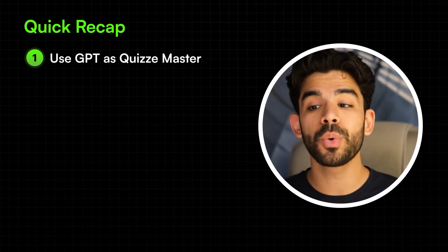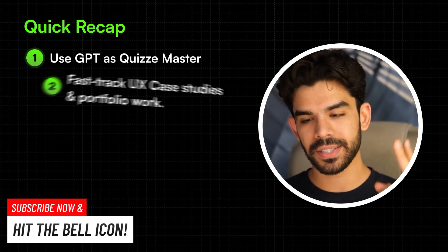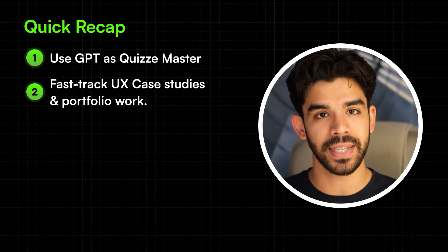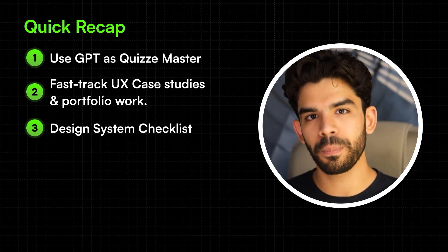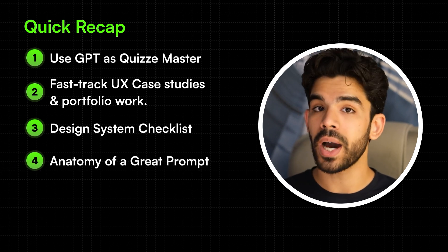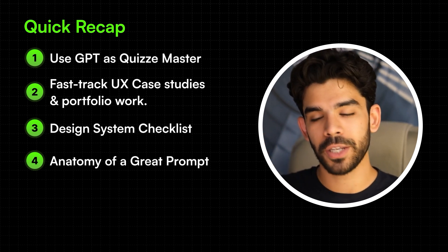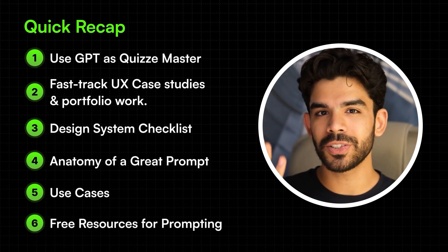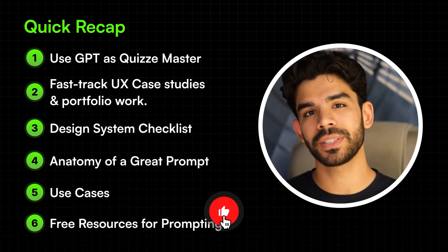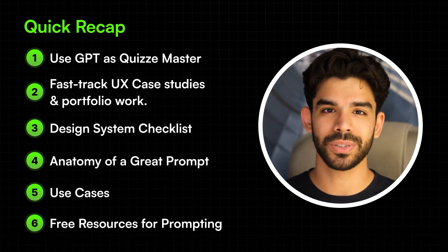Let's do a quick recap. First, we used GPT as a quiz master for training on the laws of UX — you can swap that with any field or subject. Next, we designed a prompt to fast-track UX case studies and portfolio work. On number three, we discussed a prompt giving a detailed checklist for building a robust UI design system. We understood why those prompts were written in a specific way, with the exact vocabulary needed to make prompts better, and discussed varied use cases. Make sure you spend at least 30 minutes exploring your notes and the resources discussed.